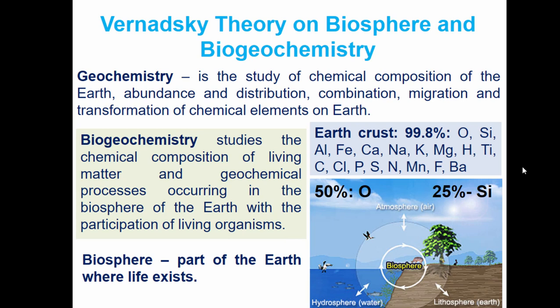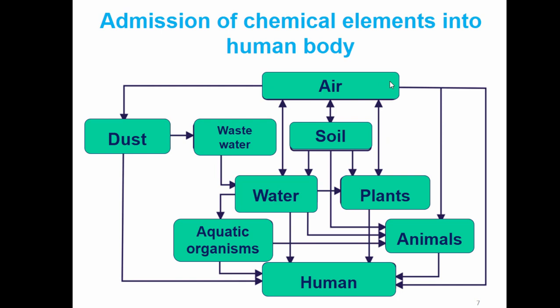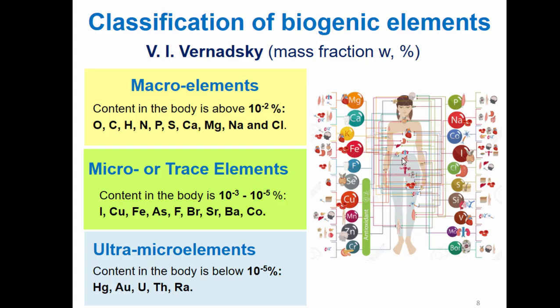What is biosphere? Biosphere is a part of the earth where life exists. Biosphere includes the lower part of atmosphere, upper part of hydrosphere, and the lithosphere. Human body takes all these chemical elements from the environment. From air we can get these chemical elements through animals, directly, through plants, through soil, through water, through dust — this is how chemical elements enter our bodies.